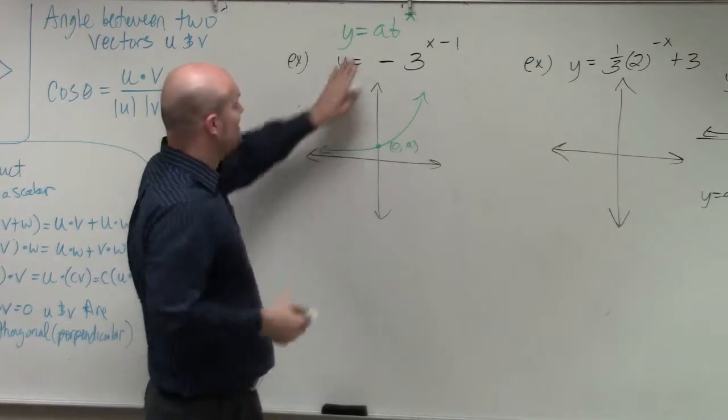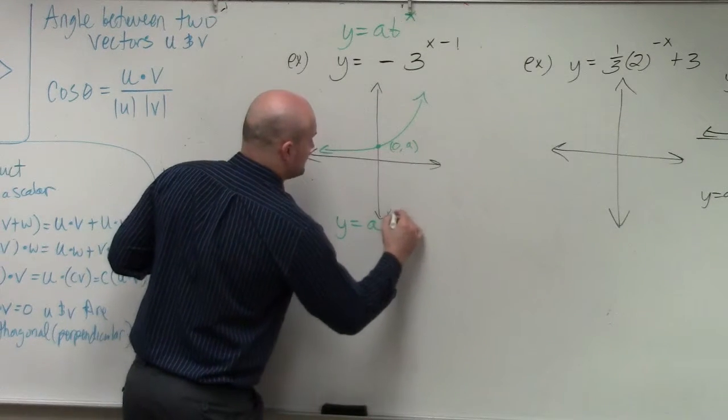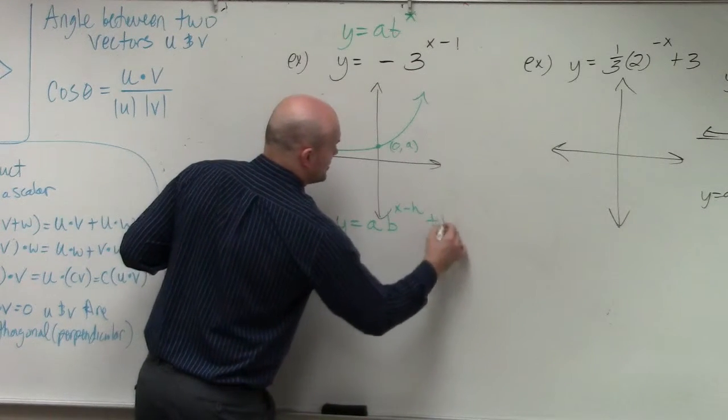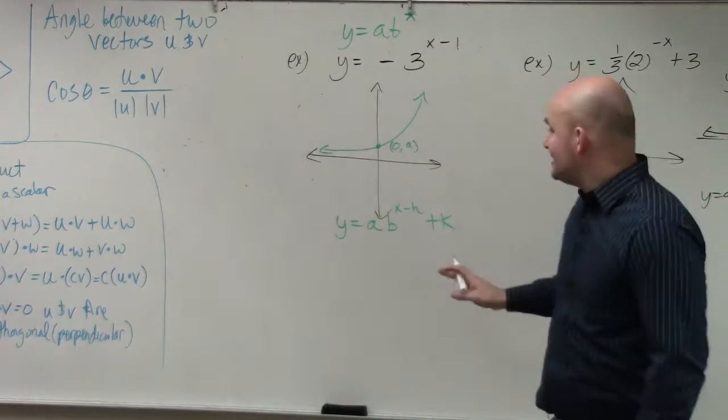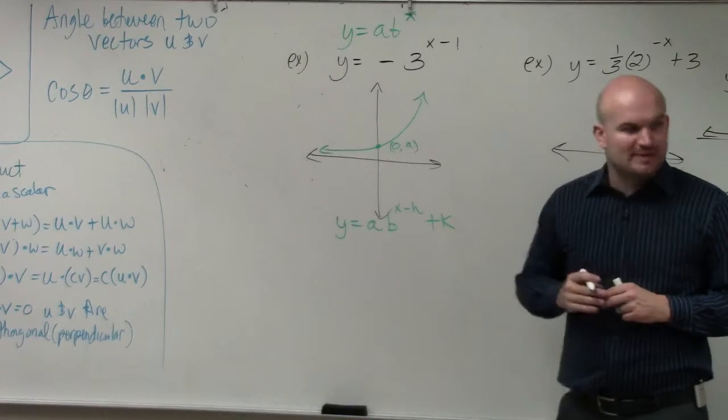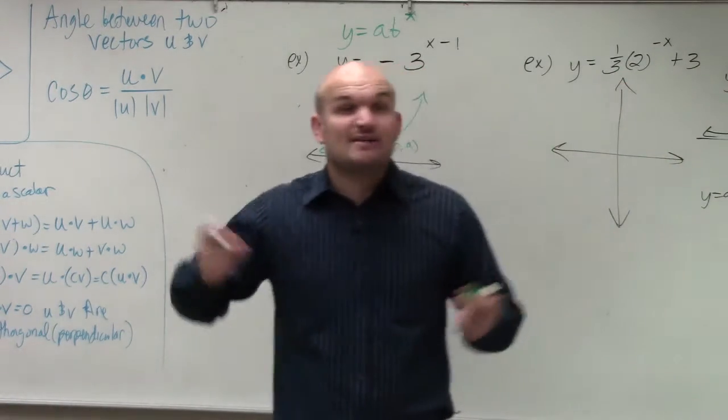The next thing is, that is our parent graph. But we also talked about y equals a times b raised to the x minus h plus k. So if you're really having trouble with this, I would recommend writing in what a is, what b is, what h is, and what k is. Just write in every single value.